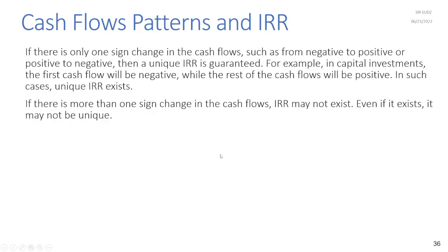Cash flow patterns and IRR: if there is only one sign change in the cash flows (from negative to positive, or positive to negative), a unique IRR is guaranteed. In capital investments the first cash flow is typically negative and the rest positive, guaranteeing a unique IRR. If there is more than one sign change, IRR may not exist, or if it exists it may not be unique.